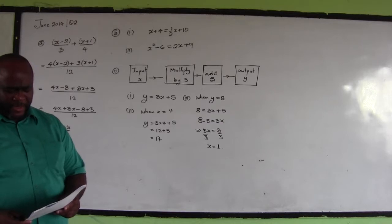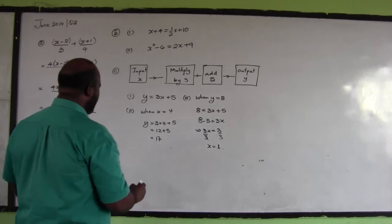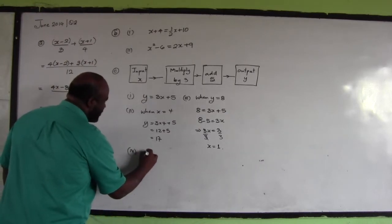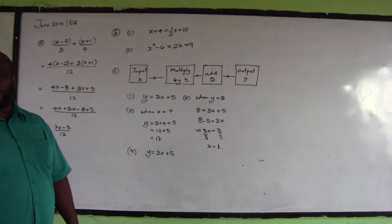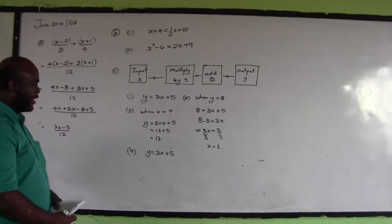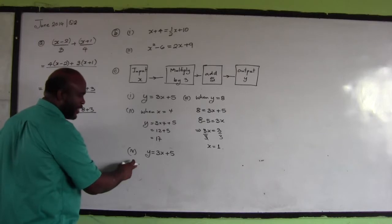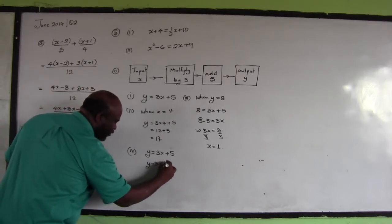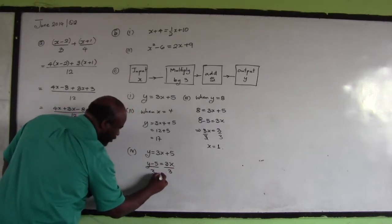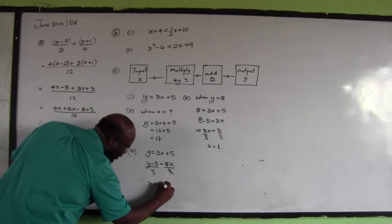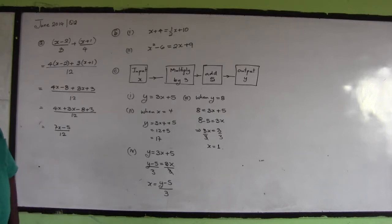Part C(iv): reverse the formula written in C(i) to write x in terms of y. The starting formula is y equals 3x plus 5. They want you to make x the subject. Positive 5 comes over and becomes negative 5: y minus 5 equals 3x. Divide both sides by 3: x equals y minus 5 all over 3.